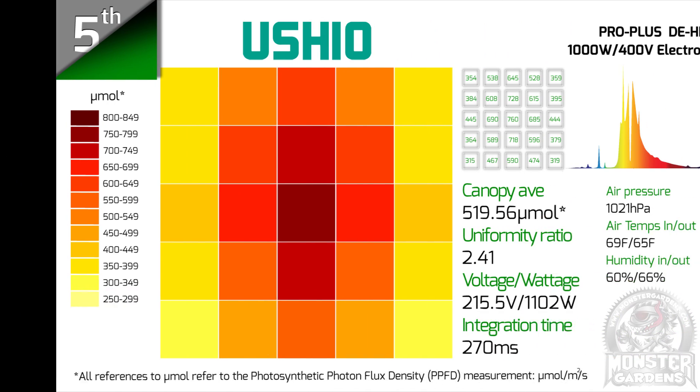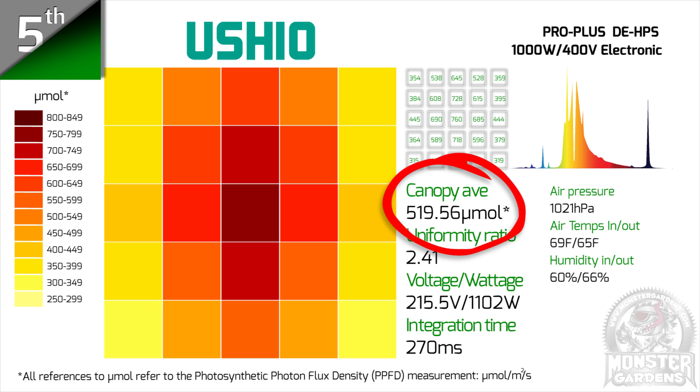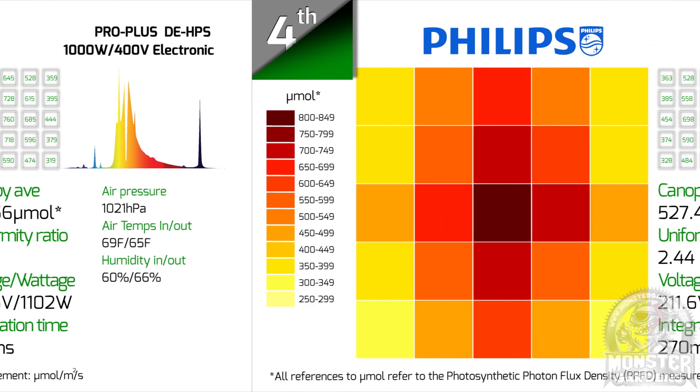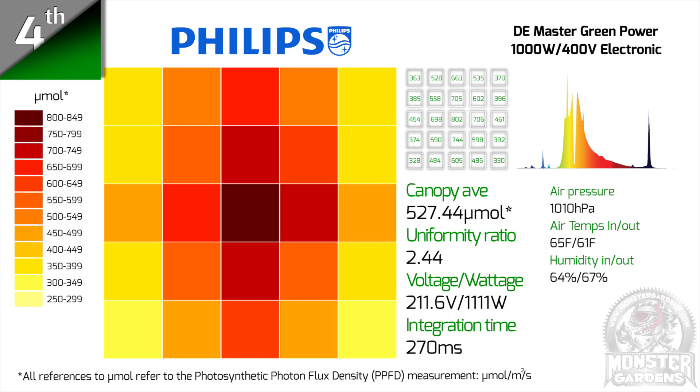Coming in fifth is the Ushio, with a canopy average of 519.56 micromoles. In fourth place, surprisingly enough, is the originator of DEHPS technology, the Philips Green Power, with 527.44 micromoles.